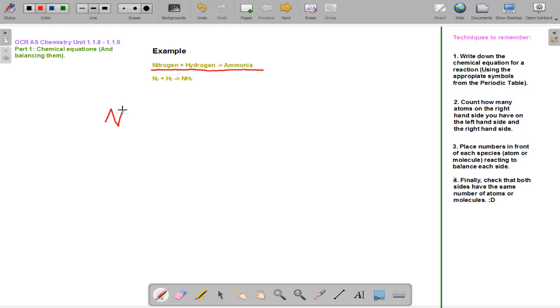we have nitrogen and hydrogen to make ammonia. We need N2 plus 3H2 to make 2NH3.